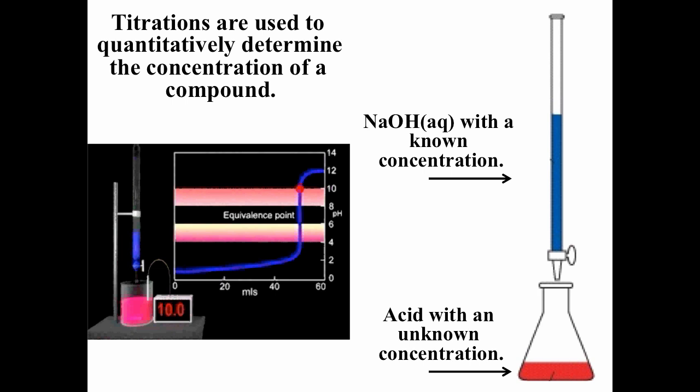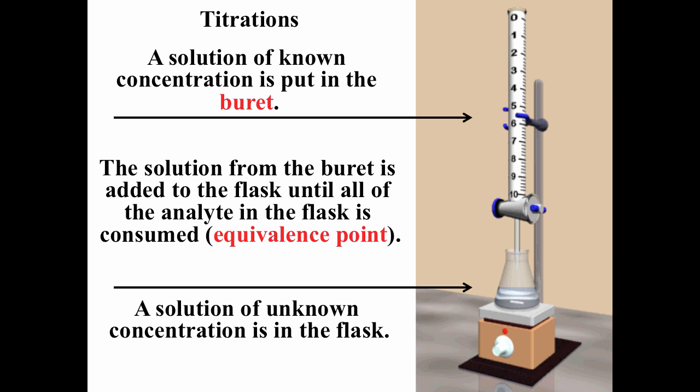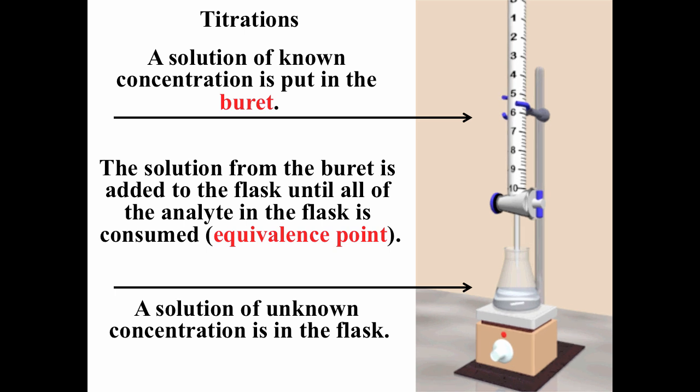For an acid-base titration, you can determine the equivalence point using either a pH meter or using an acid-base indicator. The equivalence point corresponds to when the moles of titrant added equals the moles of the analyte present in the solution initially. A solution with a known concentration is put in the burette, and a solution of unknown concentration is in the flask. We measure the initial volume in the burette, then add it slowly dropwise until we've reached the equivalence point — determined by either a pH meter or an acid-base indicator — then stop. Measuring the difference between the initial and final volume tells us the volume of titrant added.